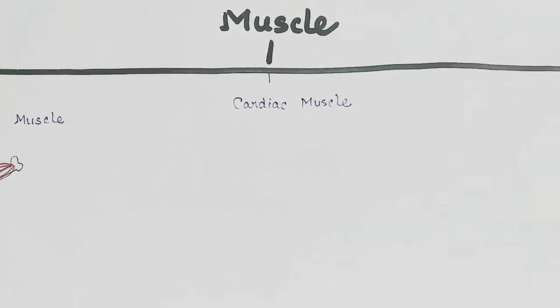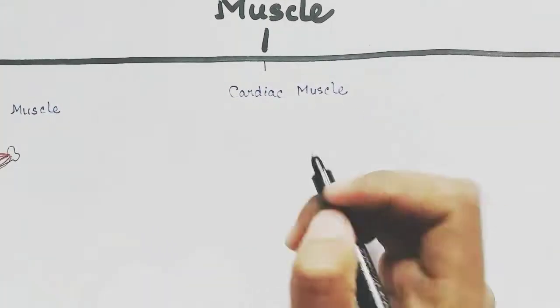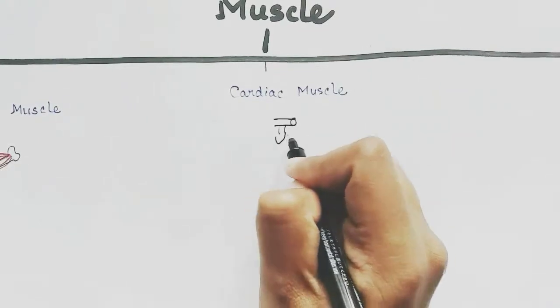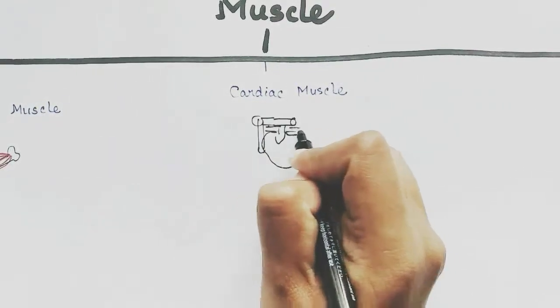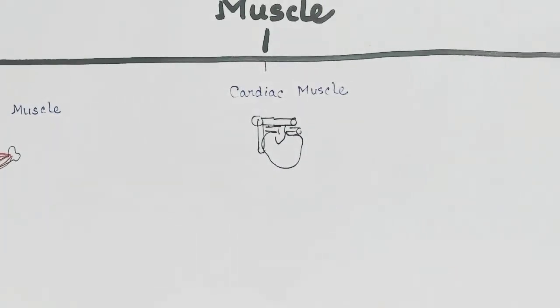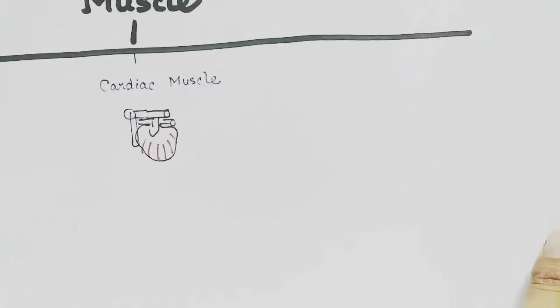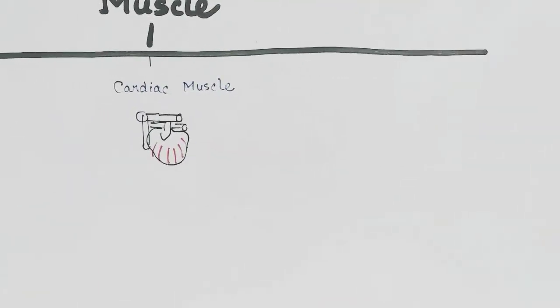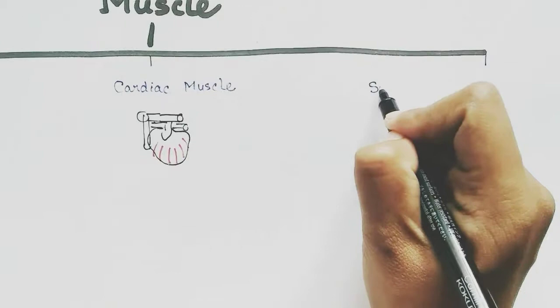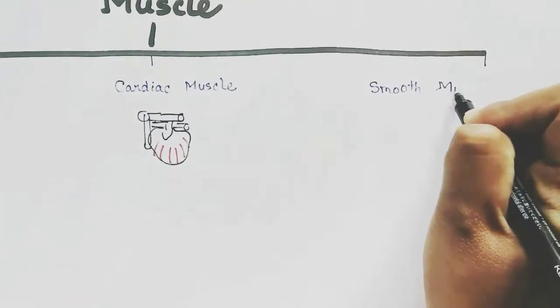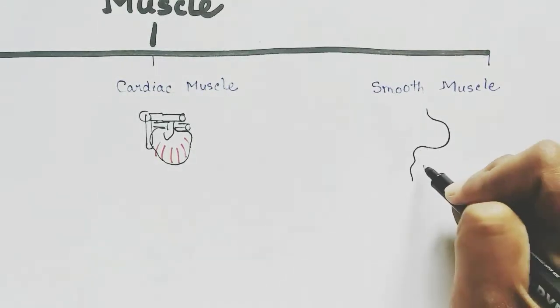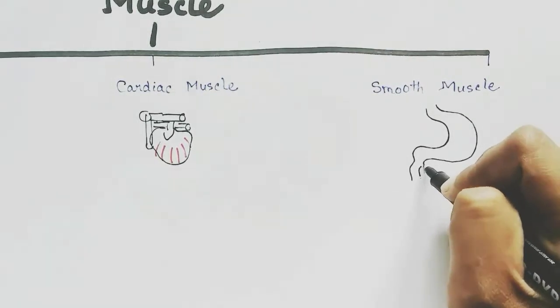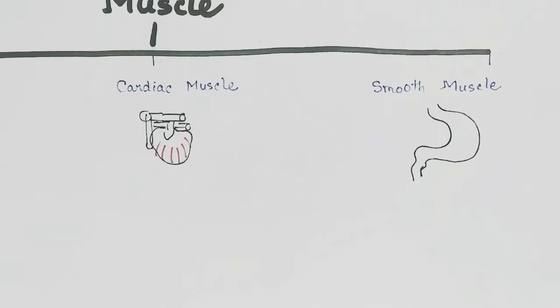The cardiac muscle helps to beat the heart. This is the heart and the cardiac muscle is seen in this region. Next is smooth muscle. Smooth muscles are mainly found in the wall of the hollow organs of our body, like stomach and intestine. It helps in movement of food, digestion, and other processes.